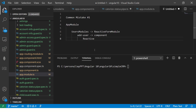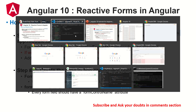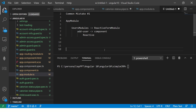As we progress I'll point out more places where you might go wrong. Step number two is to create the form. For that we need two things: form group and form control name. Those are the two important things you will work with when building the form.